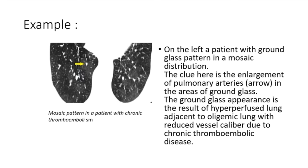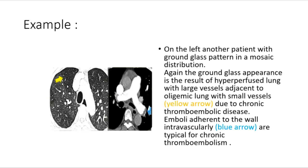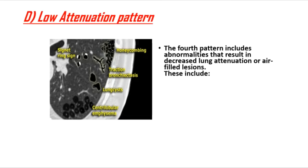A patient with ground glass pattern in mosaic distribution shows enlargement of pulmonary arteries in areas of ground glass — the result of hyperperfused lung adjacent to oligemic lung with small vessels (yellow arrow) due to chronic thromboembolic disease. Another patient shows the same mosaic pattern with large vessels adjacent to oligemic lung with small vessels. Emboli adherent to the vessel wall intravascularly (blue arrow) are typical for chronic thromboembolism.